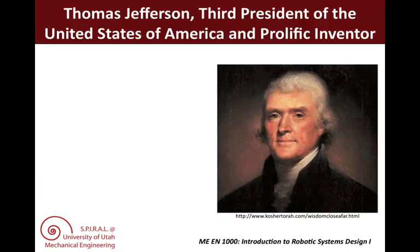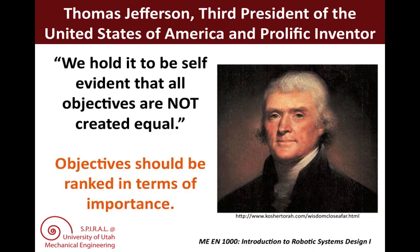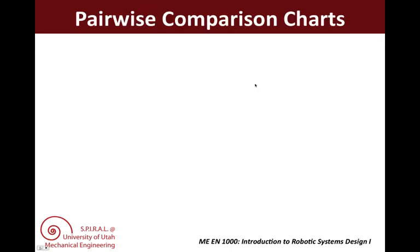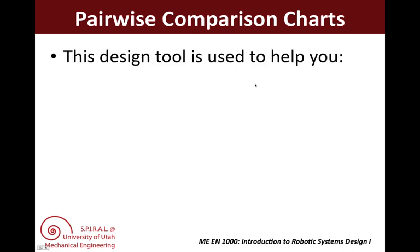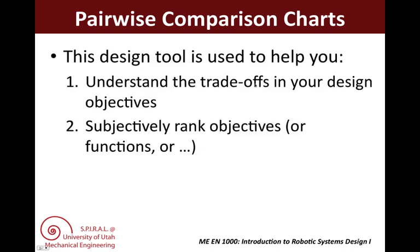I'm sure you all recognize President Thomas Jefferson, a prolific inventor who said, we hold it self-evident that all objectives are not created equal. Following this wisdom, we know that we must rank objectives in terms of their importance. To do this, we use pairwise comparison charts, or PCCs. This tool helps us understand the trade-offs in our objectives, subjectively rank these objectives, and structure our priorities.